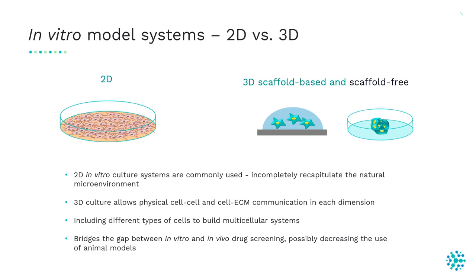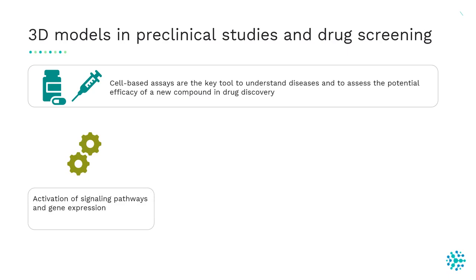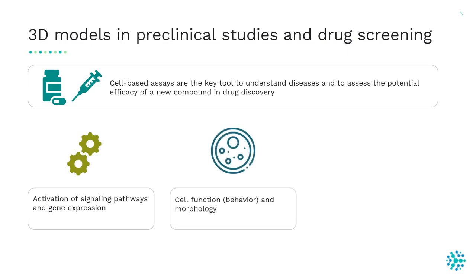In 3D systems, it is possible to build multicellular systems that bridge the gap between in vitro and in vivo drug screening, potentially decreasing the use of animal models. 3D models are key tools for understanding diseases and assessing the potential efficiency of new compounds. Previous studies have shown that cells in a 3D environment activate typical signaling pathways of solid tumors and cancer-specific gene expressions, and that cell function, behavior, and morphology are similar to what is seen in vivo.